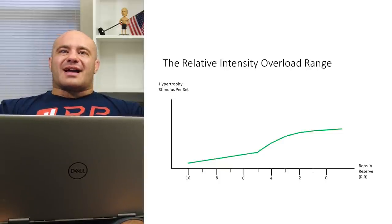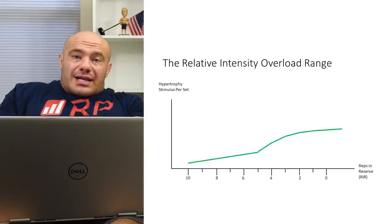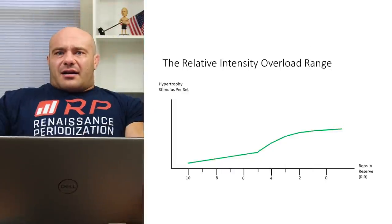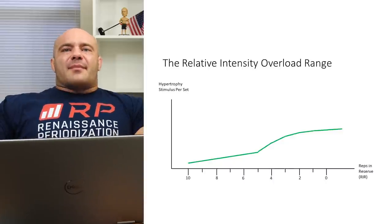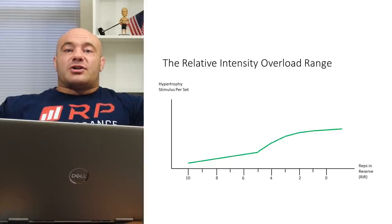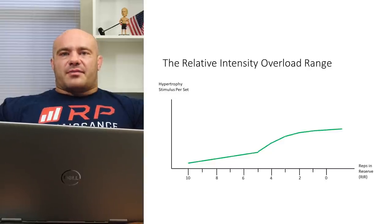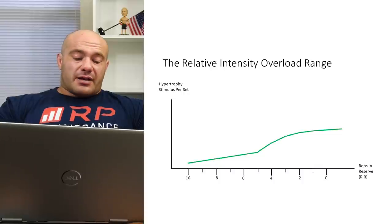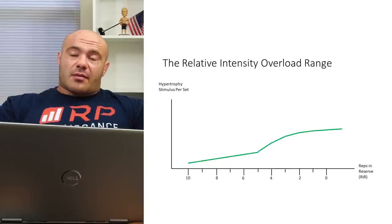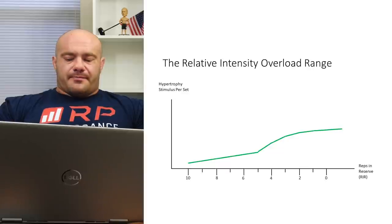After two RIR, you start to have more and more fatigue probably rising faster than the stimulus. Anytime you train between two and zero reps in reserve — and certainly past failure — you're on the clock. You can only get that optimal output for maybe a couple of weeks, maybe just one week if training to failure or beyond. Fatigue will have accumulated way too much after that. But anything between five and zero reps in reserve is probably a good representation of the relative intensity overload range.